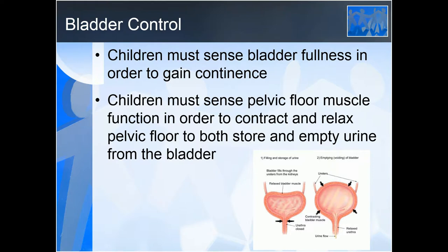In order to obtain bladder control, children must sense bladder fullness — they need to know when it is time to go. If they cannot sense that due to sensory processing dysfunction, they may not be able to sense when they need to go, which could lead to bladder issues. Children must also sense pelvic floor muscle function — they must feel what those muscles are doing in order to contract and relax to store and empty urine. In a child with spina bifida, for example, they may not sense the pelvic floor and will have problems with continence.